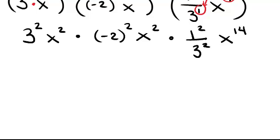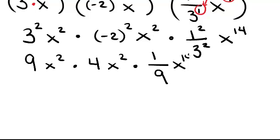So now I simplify whatever I can. I see that 3 to the second is 9. Negative 2 to the second is 4. 1 to the second is just 1. 3 to the second is 9. And then I just have the x to the 14th.